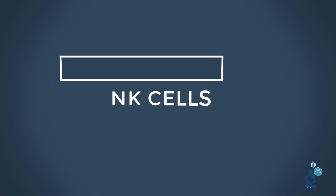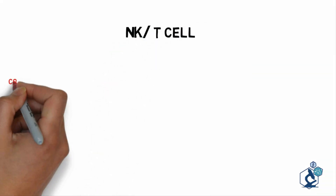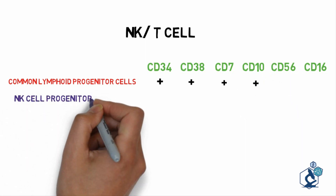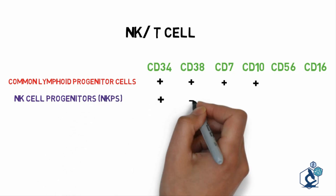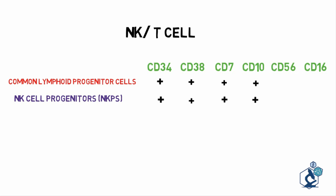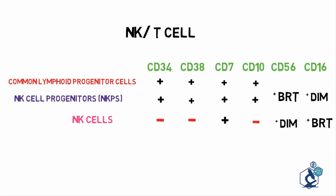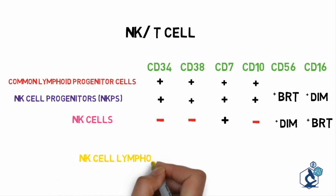Let's move to NK cell development as part of hematopoiesis. NK cells also originate from common lymphoid progenitor cells and have a series of CD markers that define them. NK cell precursors are positive for CD34, CD38, CD7, and CD10. All of these CD markers are lost in mature NK cells except CD7. CD56 is bright and CD16 is dim on precursors, whereas CD16 turns bright on maturation and CD56 gets dimmer with maturation. NK cells give rise to various NK cell leukemias and NK cell lymphomas.